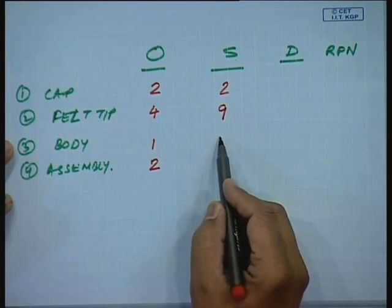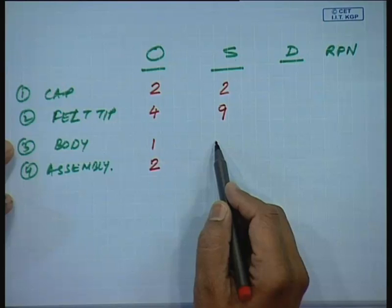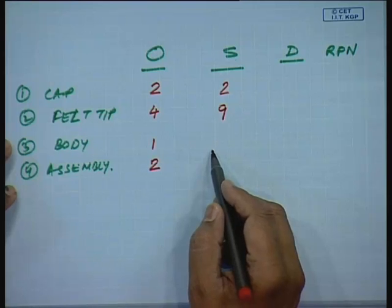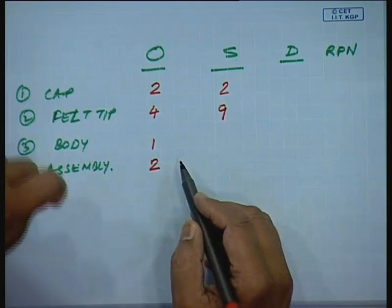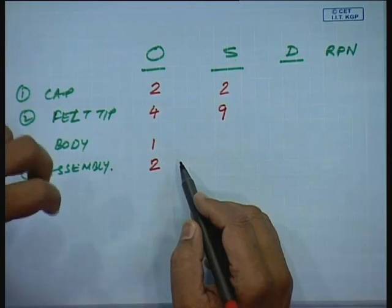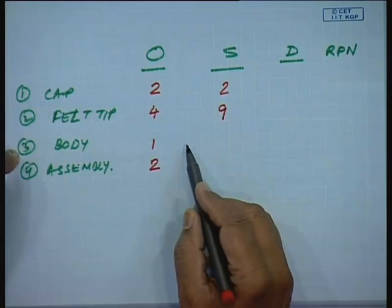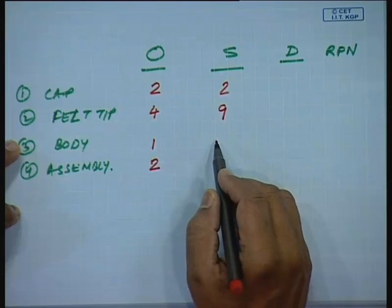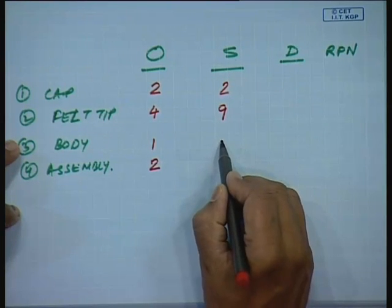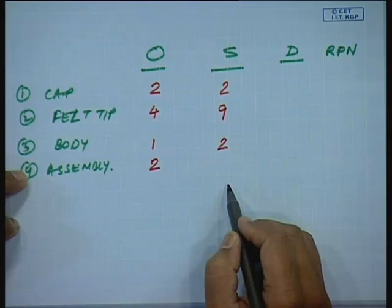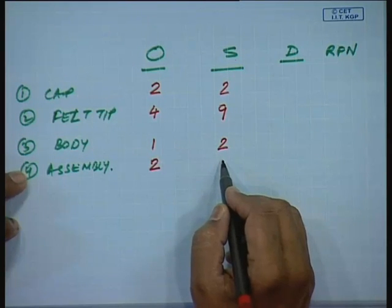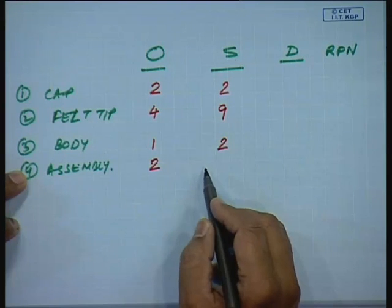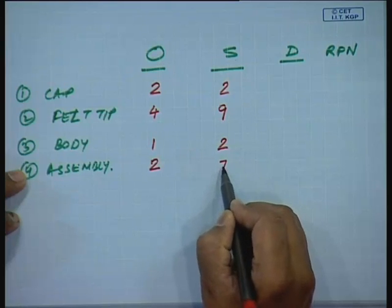If the body of a felt pen fails, it is not that severe because the ink is not going to leak out — unlike an old fountain pen where the body was a container of ink. So I give the body a severity rank of 2. For assembly, if it was not proper the pen would not work, so I give it a high number.